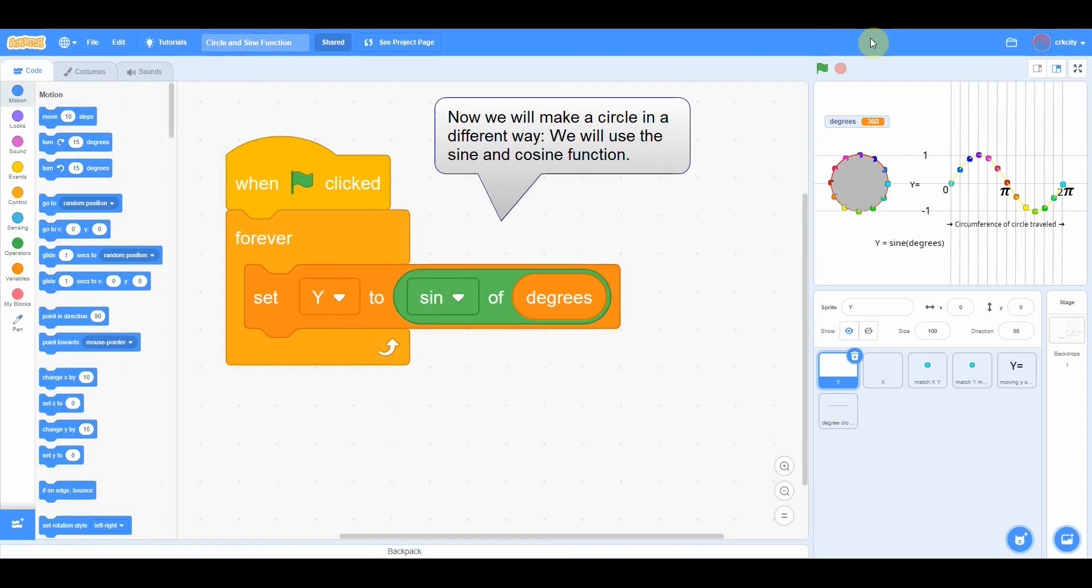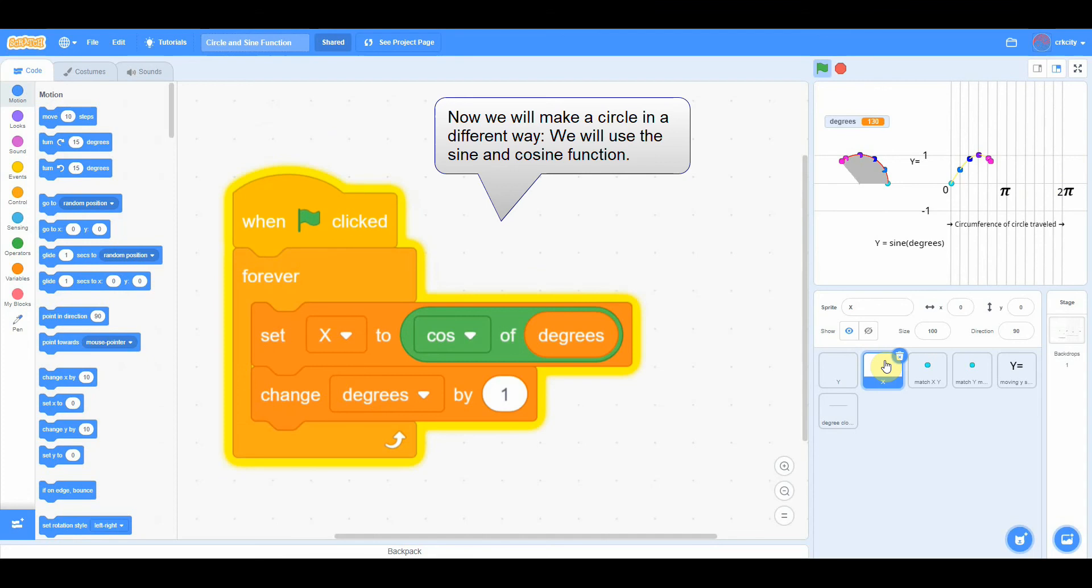Now the sine function we can use in Scratch to make the circle. We can just set the Y to the sine of the degrees. And then we set X to the cosine of degrees. And a cosine is just a version of the sine. And now we have the XY position of a circle.